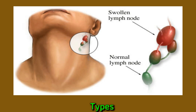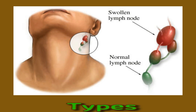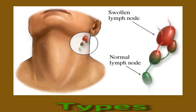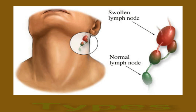An infection in a nearby area, such as the ear or throat, can lead to lymphadenitis in the cervical lymph nodes of the neck. The infection can also affect other lymph nodes if it enters the bloodstream. Lymphadenitis can typically occur due to the following: ear infection, colds, skin infection, and dental infection.